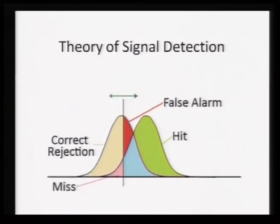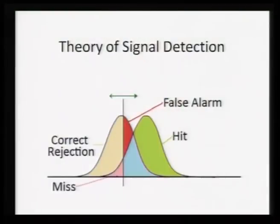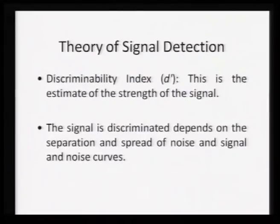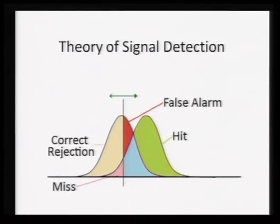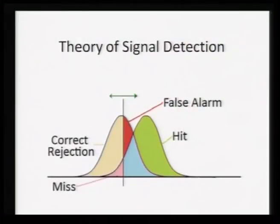Looking at the matrix again: when the signal is present and you say yes, it is green — a hit. When the signal is present but you say no, you miss it. The discriminability index D prime refers to the threshold you set: if it moves above this index you say yes, if less than this you say no — and this is how hit and miss are decided, as are false alarm and correct rejection. When the signal is not present and after the D prime index you say no it is not present, that is correct rejection. The ROC curve — receiver operating characteristic curve — is plotted with hits on the y-axis and false alarms on the x-axis.